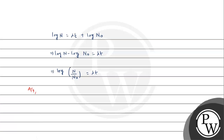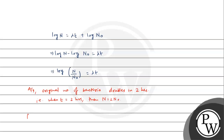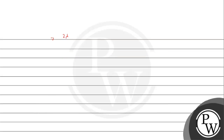According to the question, the original number of bacteria doubles in 2 hours. That means when t equals 2 hours, n equals 2n0. Putting t equals 2 and n equals 2n0 into our equation: log(2n0 / n0) equals lambda times 2. So 2 lambda equals log 2, therefore lambda equals (1/2) log 2.